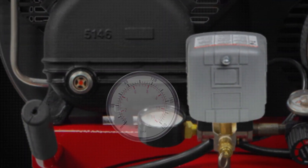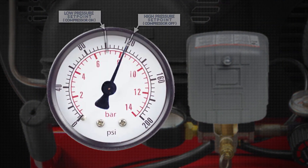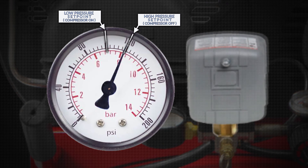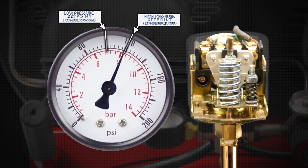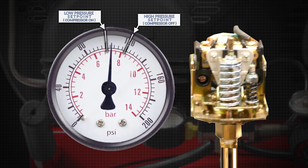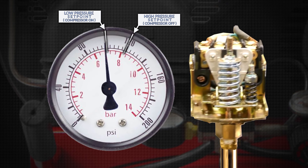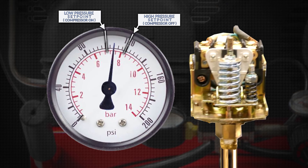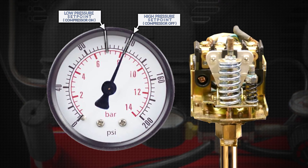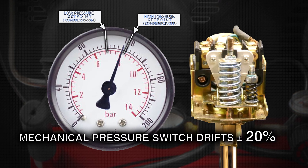An air compressor pressure band gap is the area between the low and high pressure set points. In most air compressors, the set points are set with a mechanical switch that relies on spring tension that is imprecise, unrepeatable, and subject to environmental humidity, vibrations, and pressure. Due to mechanical wear together with fluctuating environmental conditions, both the low and high set points drift over time, with estimates as high as 20% annually.